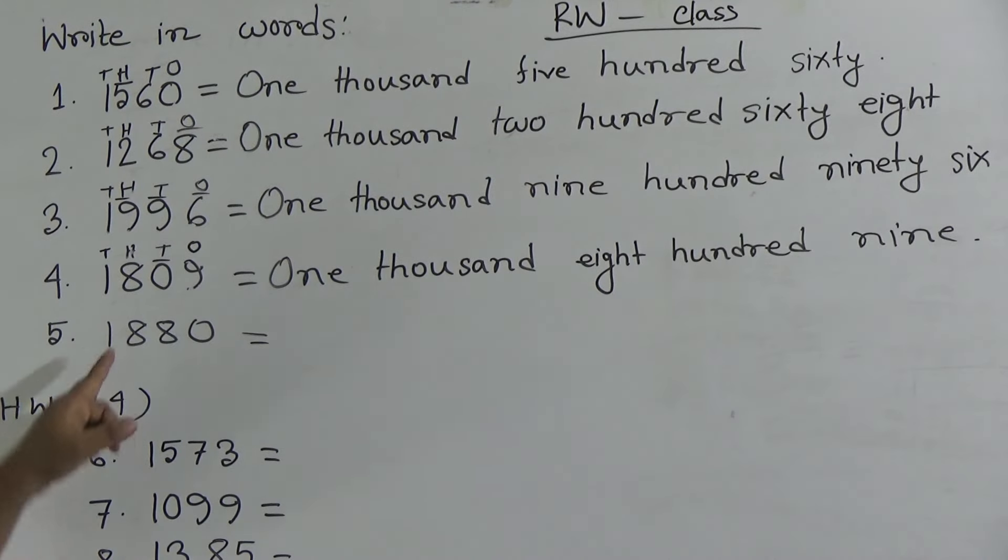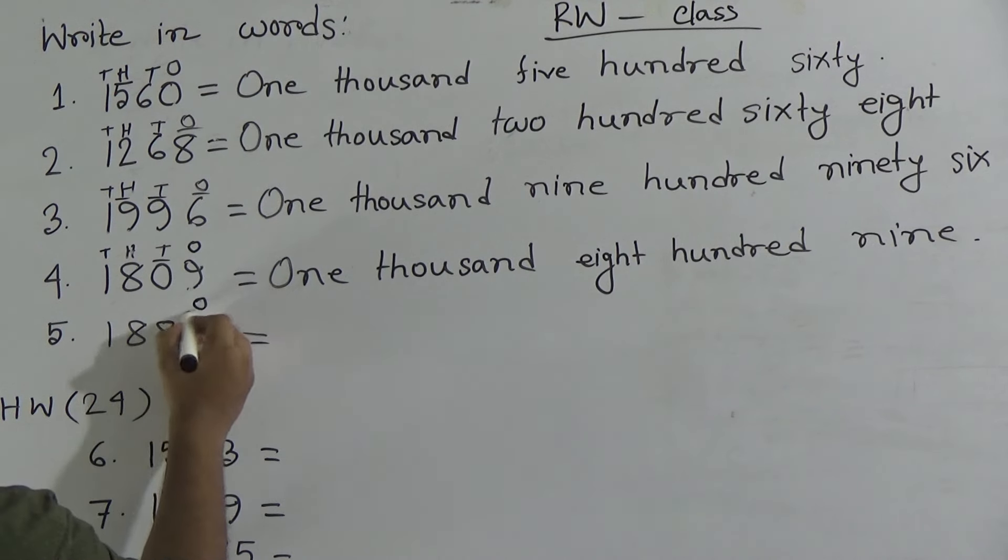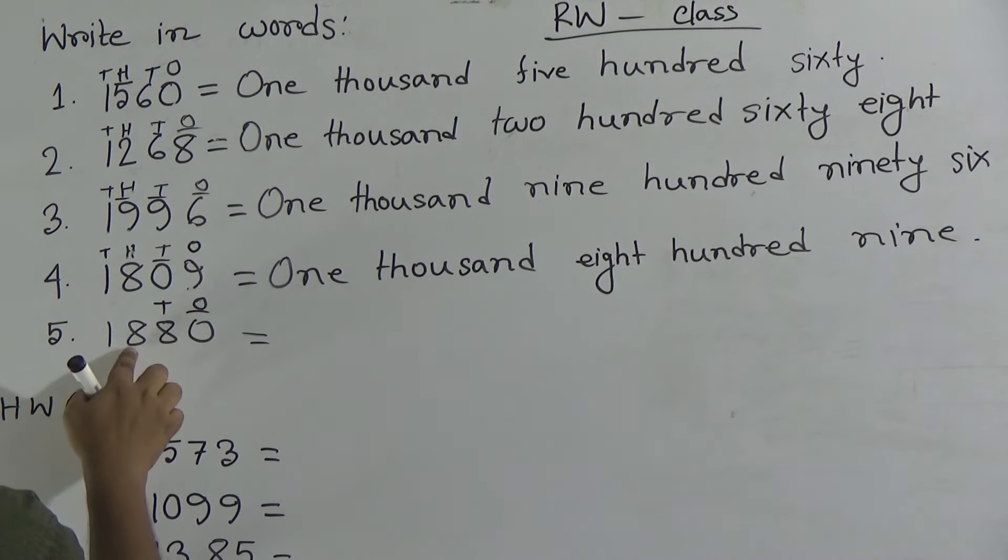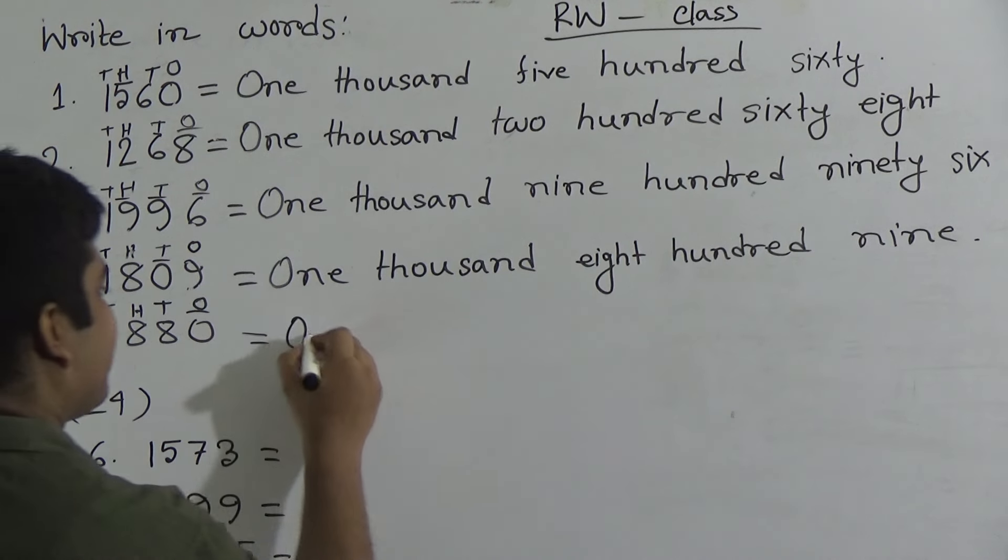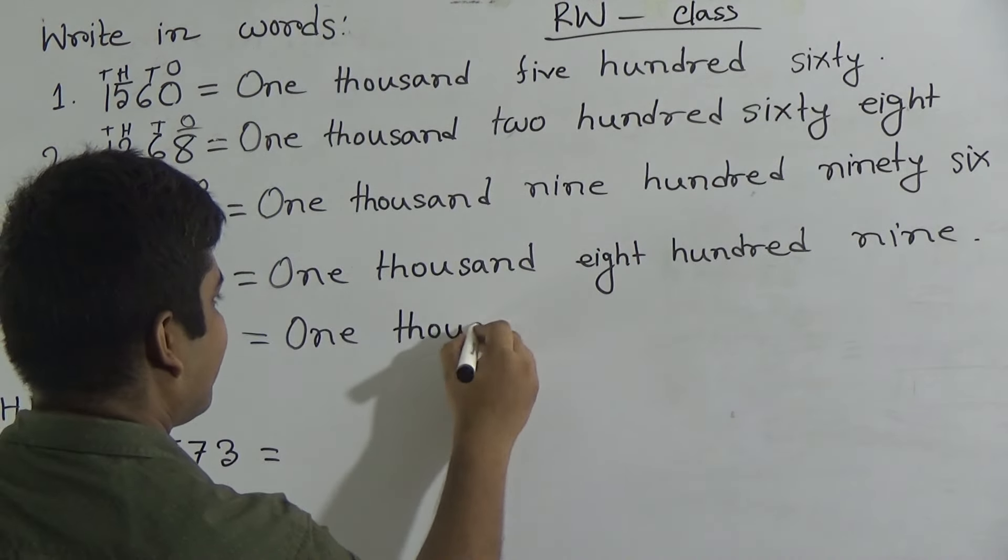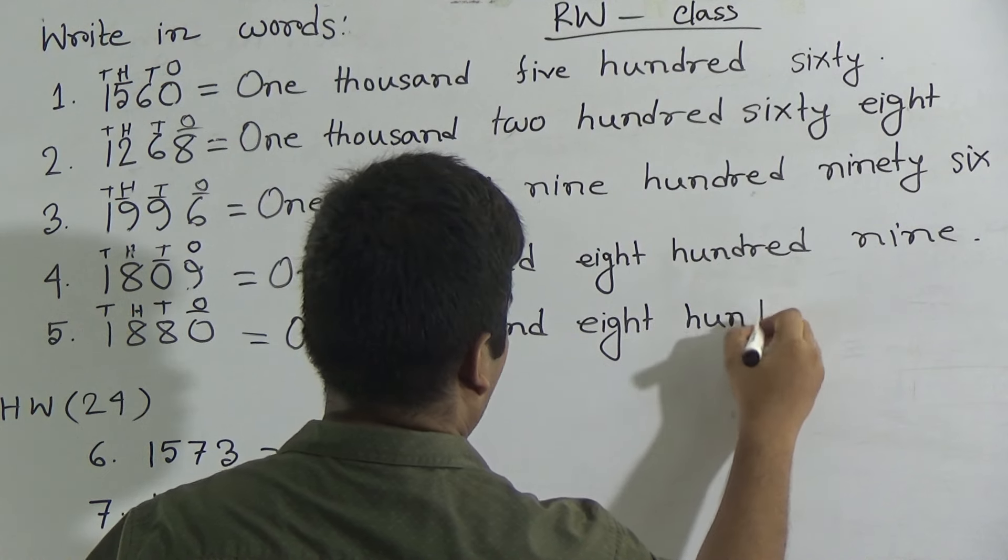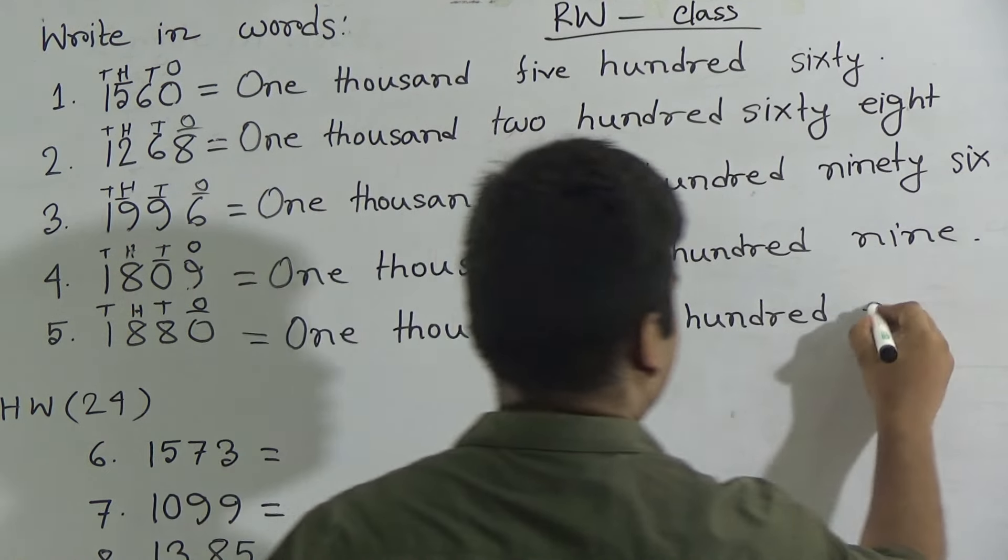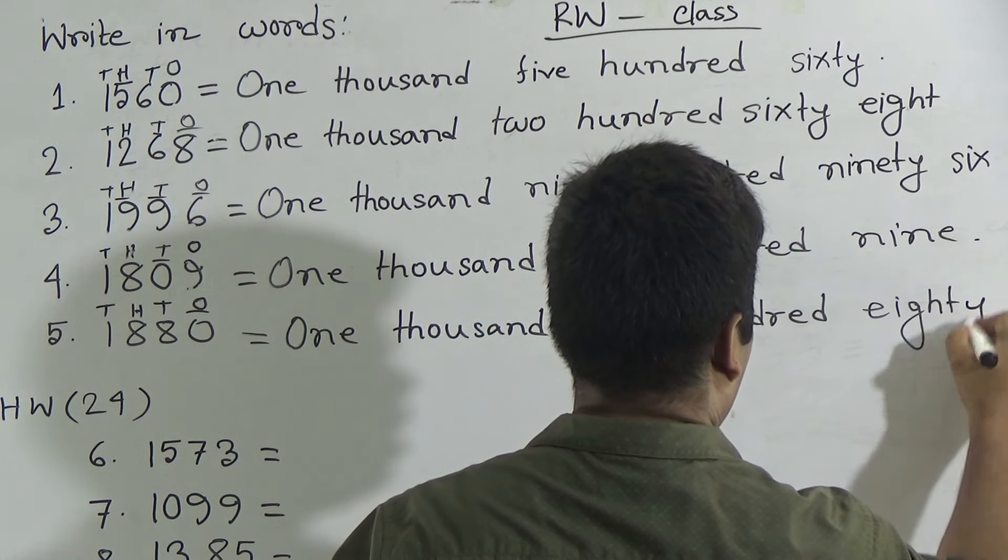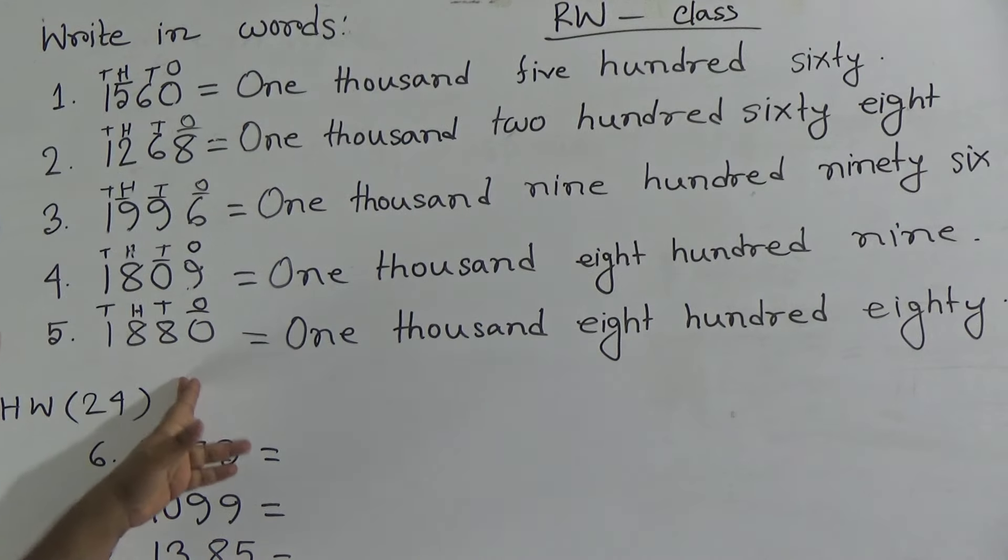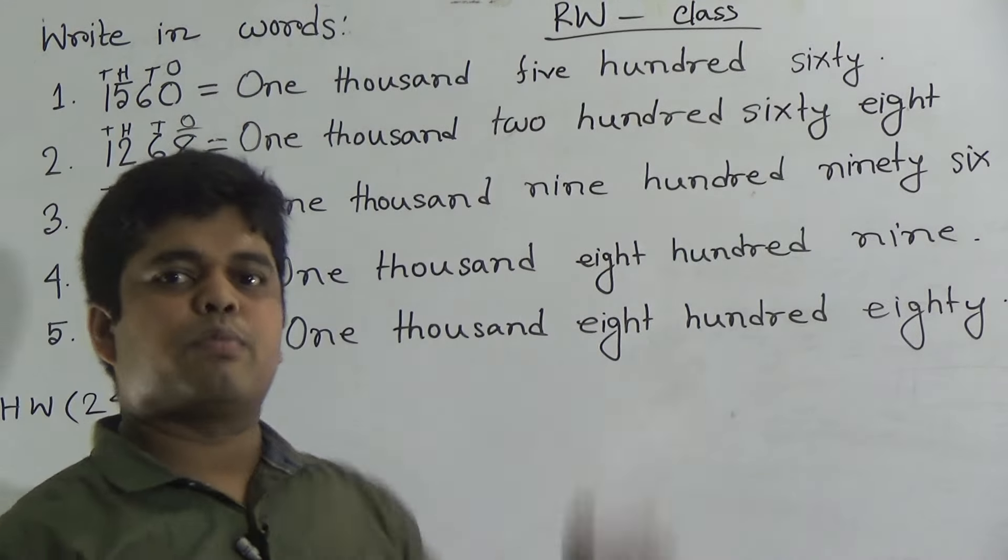Our last one 1880. 0 is in ones place, 8 is in tens place, 8 is in 100 place and 1 is in 1000 place. Dear students, this number read as 1880. Write this one similar way: write 1000 T-H-O-U-S-A-N-D, 1800 E-I-G-H-T 800 H-U-N-D-R-E-D, 180. Dear students, please give attention to my class. RW class is very very important for you. You must do this class very carefully because based on your RW, some marks is given to your annual exam.